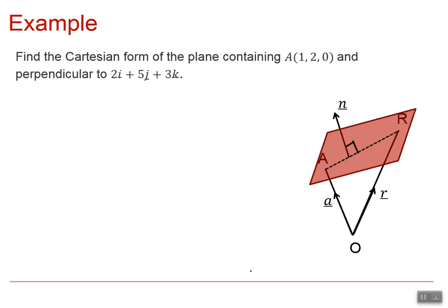We're going to find the Cartesian form of a plane containing point (1,2,0) and perpendicular to 2i plus 5j plus 3k. From this, if it's perpendicular to this, we can write down straight away that the normal vector is (2,5,3) and that a point on the plane is (1,2,0).